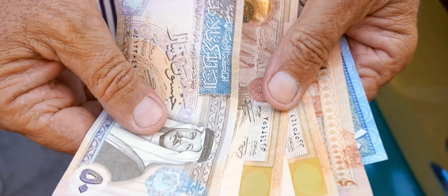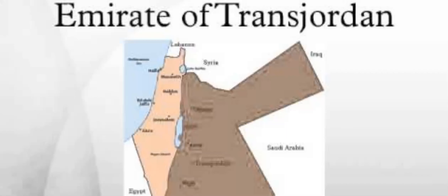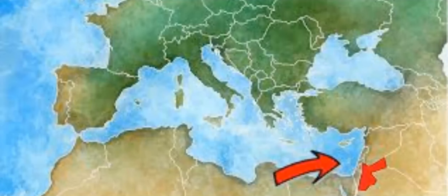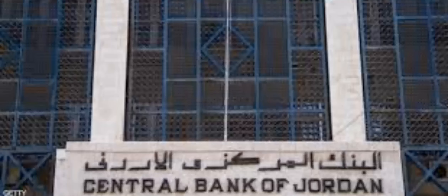About Jordan currency: Jordan adopted the dinar as its official currency in July 1950. It replaced the Palestinian pound, which had circulated since 1927 in the British Mandate of Palestine and the Emirate of Transjordan, a British protectorate. Following independence, the Jordan Currency Board was established to issue and circulate currency. In 1959, the Central Bank of Jordan (CBJ) took over production and monetary policy.